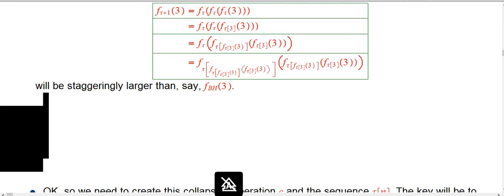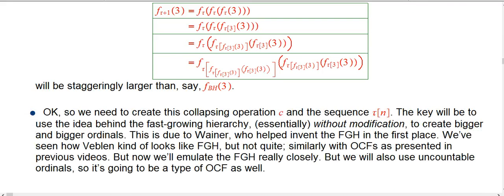So we need to create this collapsing operation c and the sequence tau of n, and we're actually going to recreate a lot of stuff from scratch to do that. I'm not just going to trot out the explicit definitions right away, I'm going to lead us into that, motivate that.